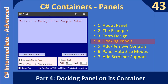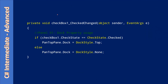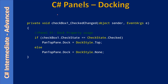We will try to dock the panel towards the top of this form. First we will implement the CheckedChanged event on the checkbox. In the CheckedChanged event handler, we are accessing the checkbox and then its check state. If the checkbox check state is in the checked state, then we will access the dock property and set the top style for it.